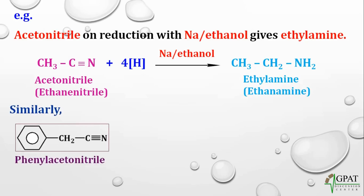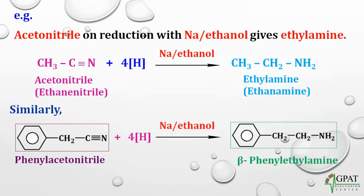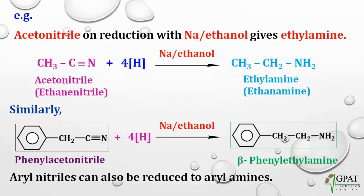Similarly, let us take another example. This is our phenylacetonitrile. On reduction in the presence of sodium in ethanol, it gives beta-phenylethylamine. This reaction is also used for aryl amines — aryl nitriles can also be reduced to aryl amines. So this is the major advantage of the Mendius reactions.